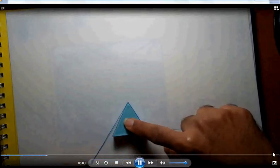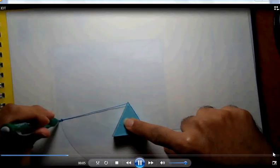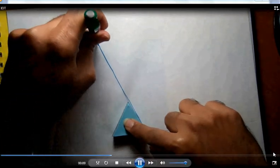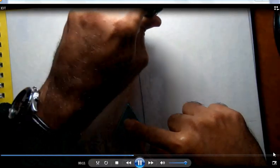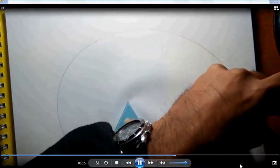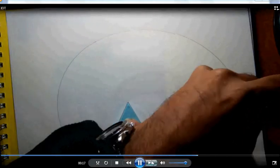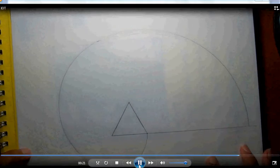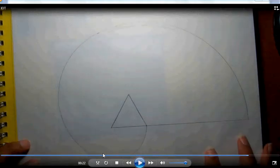Involute of a triangle is a path that the end of a string will make while unwinding it. As you can see here, as I am unwinding it, I am drawing this path. Let me pause here. This path is an involute of a triangle.